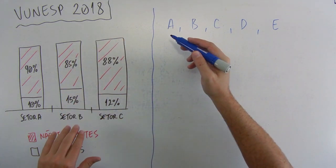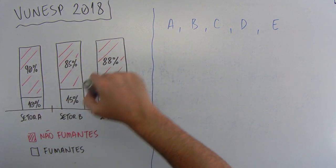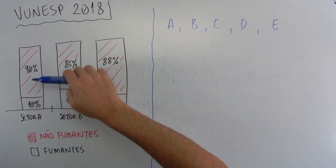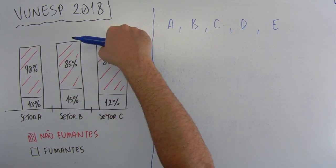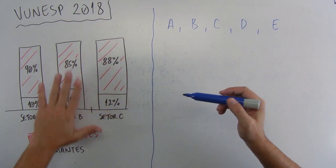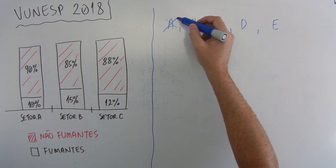Letra A. Os três setores têm o mesmo número de funcionários. Bom, existe o quantitativo de funcionários aqui do setor A, B e C? Não, mas as porcentagens é que vão importar. Se o setor A tiver 100, 100 e 100, aí sim. Então, não tem nenhum lugar aqui na questão que dê para a gente saber que os três setores têm o mesmo número de funcionários. Então, letra A está fora.